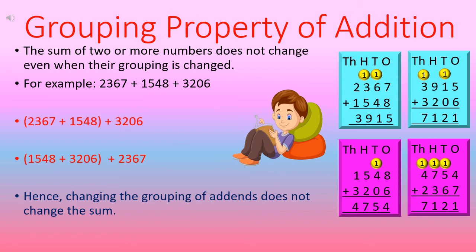Let's understand it with an example. We have the numbers 2,367 plus 1,548 plus 3,206 — so the addends are 2,367; 1,548; and 3,206. First, we make a group of 2,367 and 1,548 and add them to get 3,915. Then we add the third addend, 3,206, to 3,915 and get 7,121 as the result.